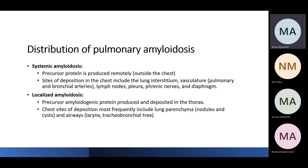Regarding distribution, amyloidosis can be systemic — where amyloid protein is produced outside the thoracic cavity and then deposited inside, including in the lymph nodes, pleura, phrenic nerve, diaphragm, lung parenchyma, or vascular structures. Localized amyloidosis means the production occurs inside the thoracic cavity, leading to symptoms inside the lungs. The most common form of localized disease is nodular amyloidosis of the lung.